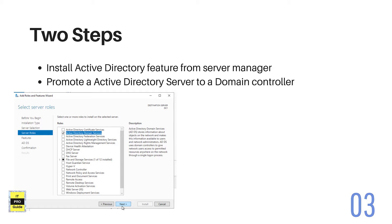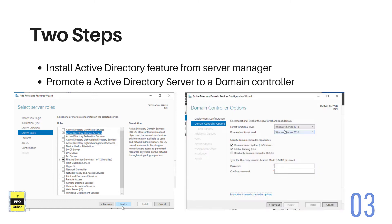We will install the Active Directory Domain Services feature. After installation, the second step is to configure the Active Directory to use it as a domain controller — a process known as promoting an Active Directory server as a domain controller. While promoting, it's a wizard-based configuration where we provide the domain name, password, Active Directory database location, global catalog, and DNS settings.